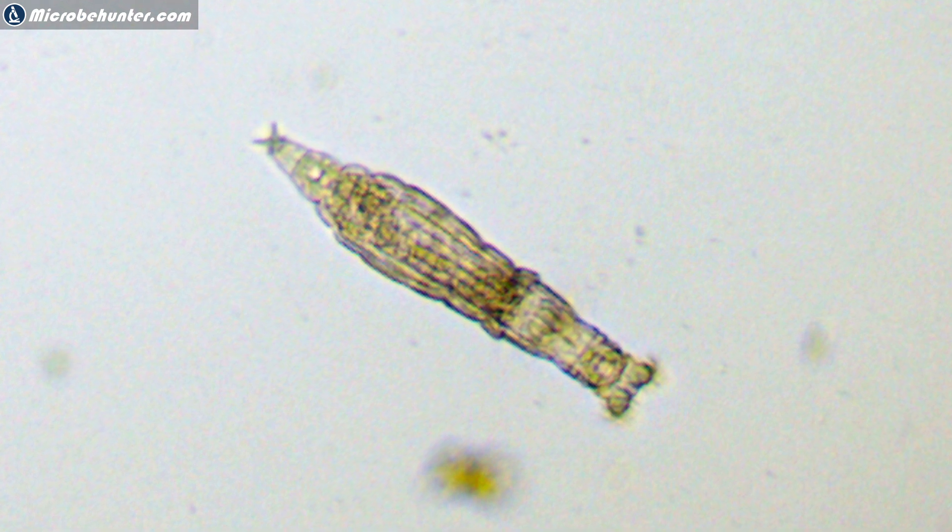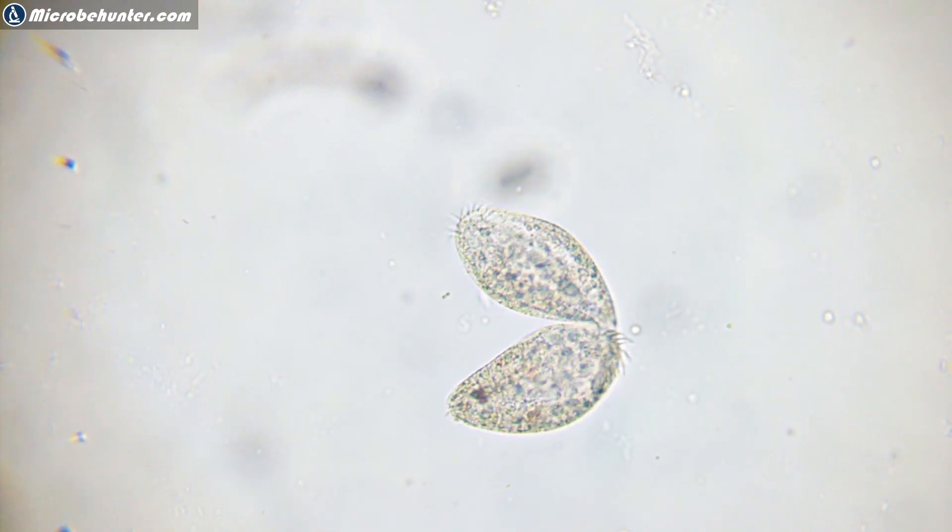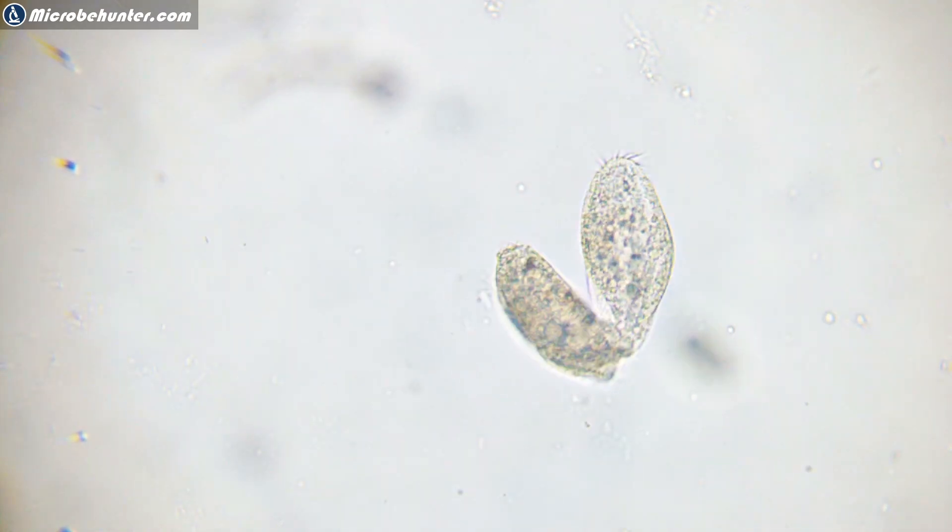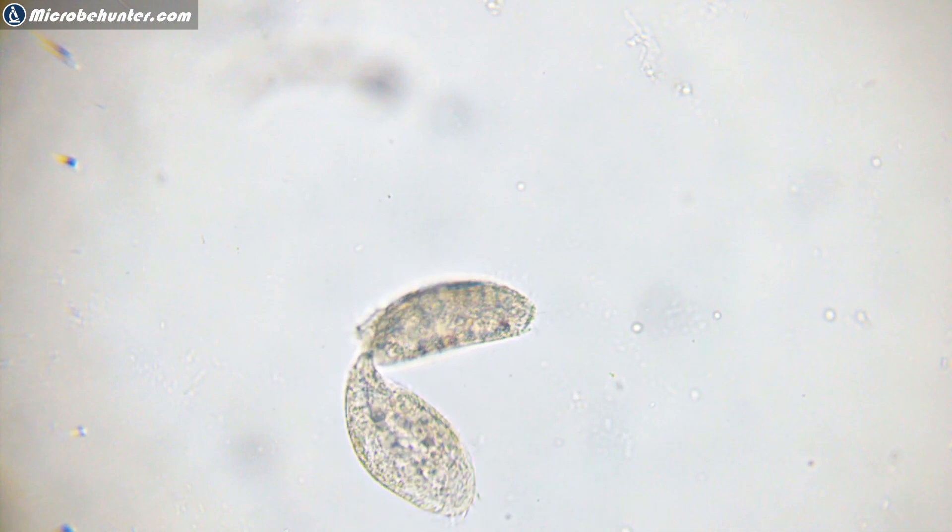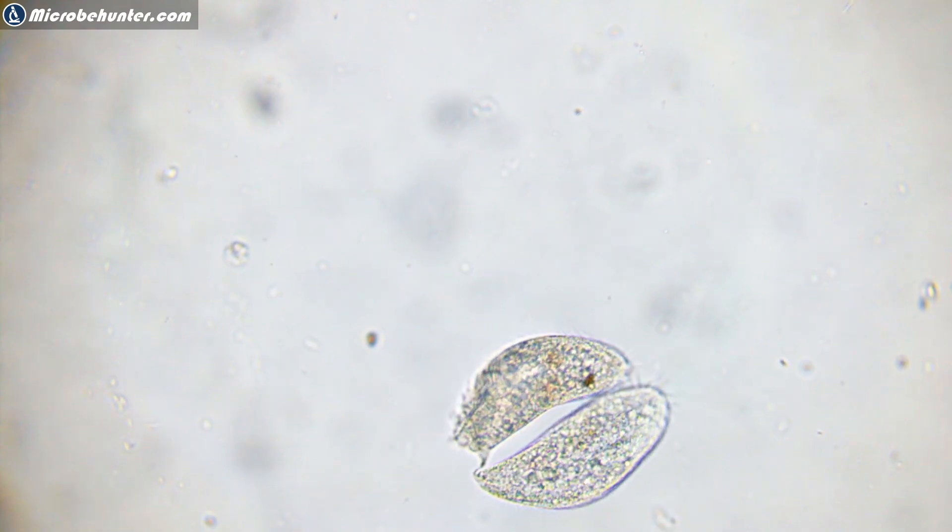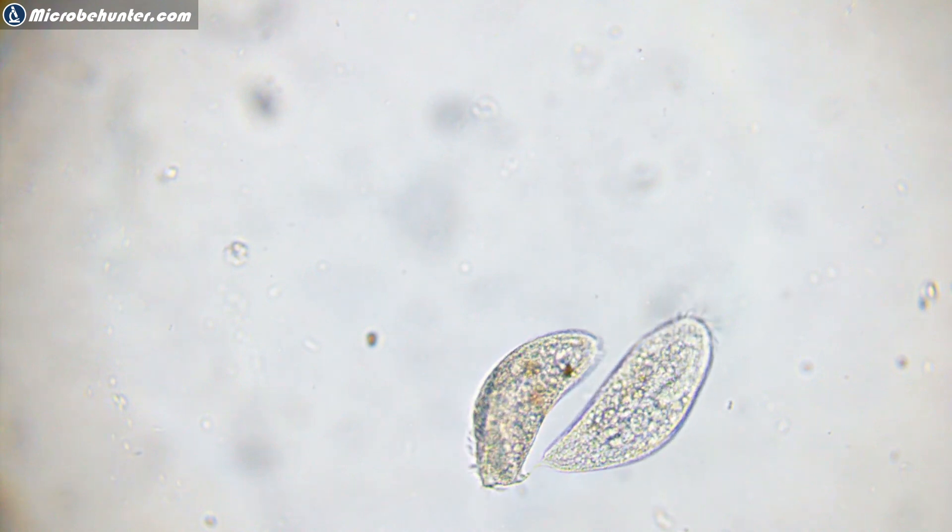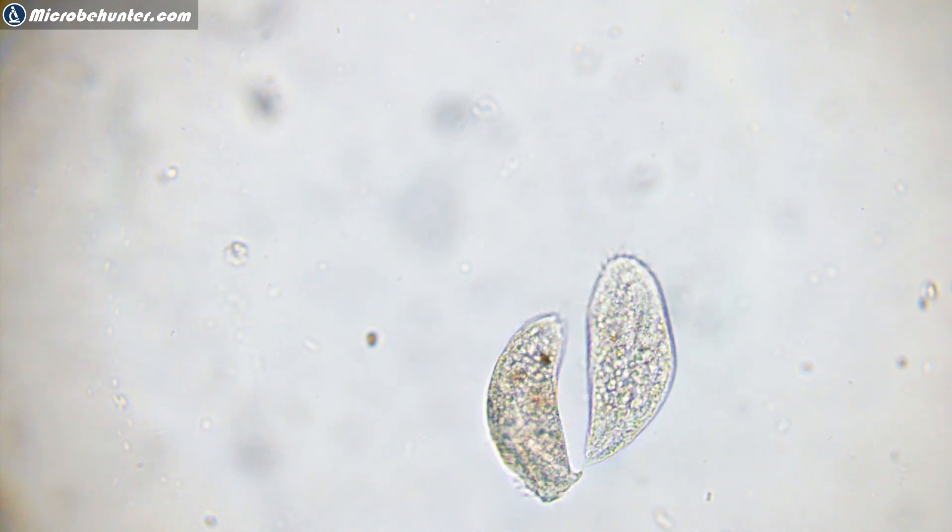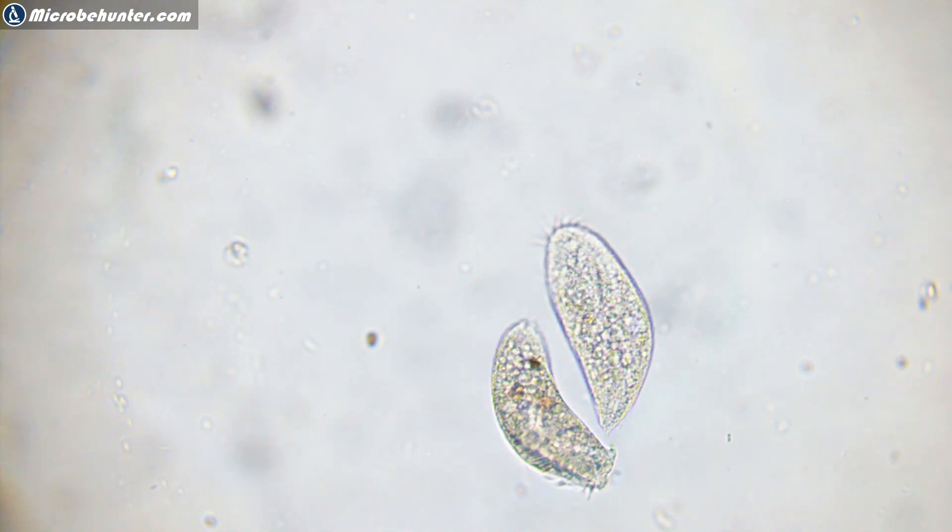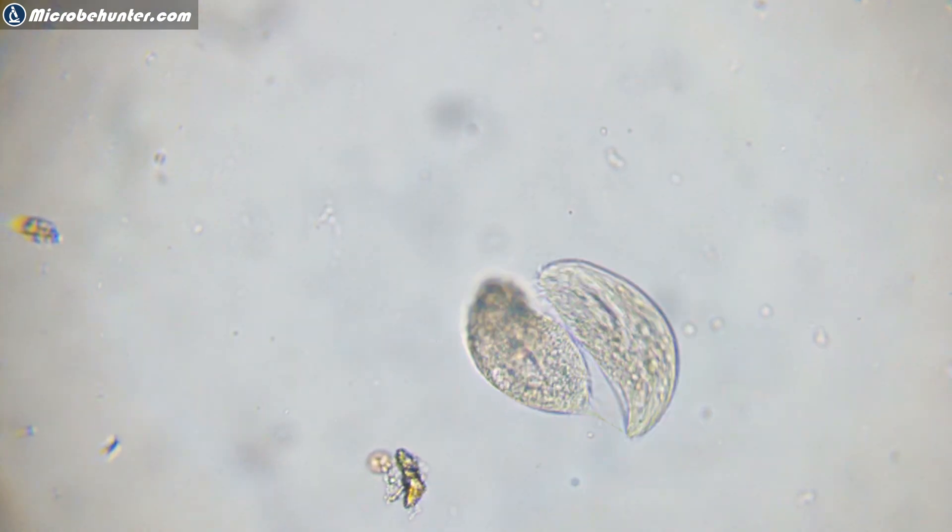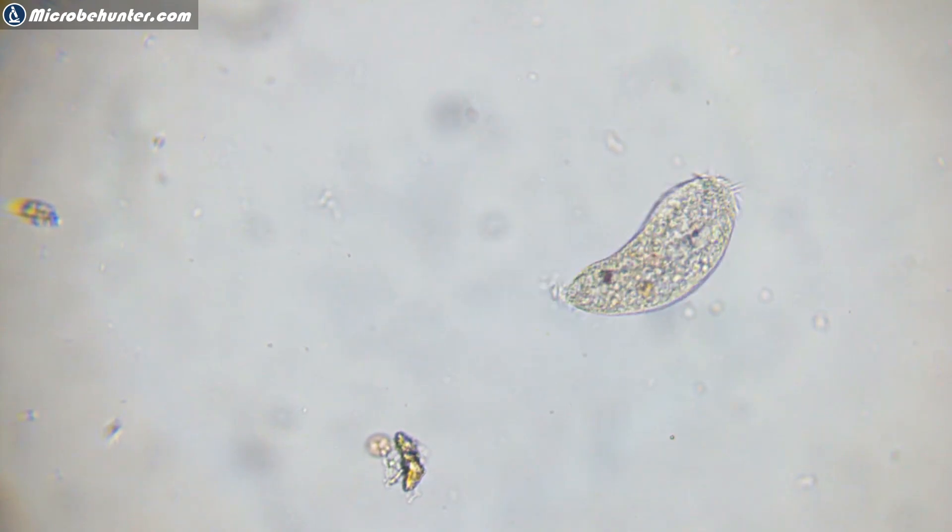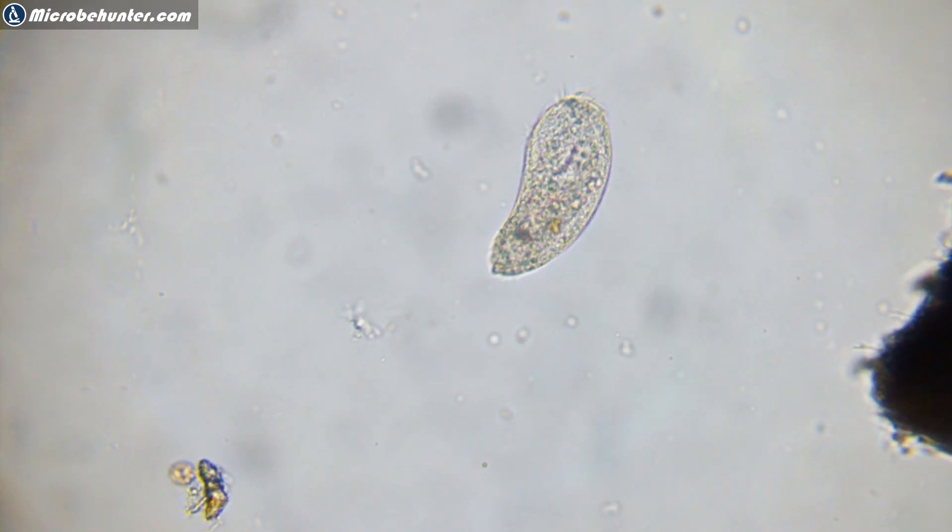Look at this, that's a dividing ciliate. I was following this along for several minutes and the connection between those two cells grew thinner and thinner until after maybe about 15 minutes or so they completely separated. So this is cell division and I observed this with a total magnification of around a hundred times. Now they're separated so I'm quite fascinated that I was able to see this.